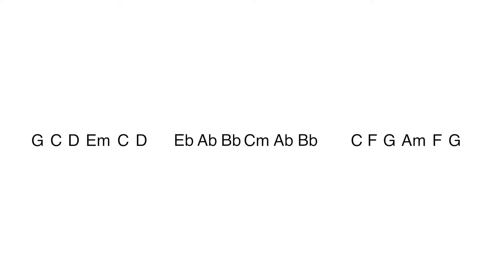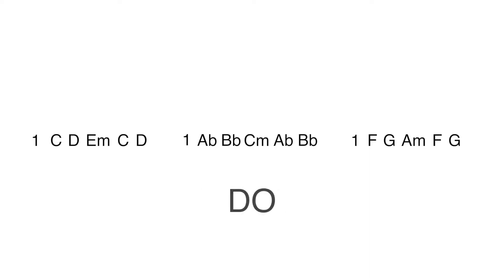This is the key to the Nashville number system. In each of these examples, we will replace the first letter of the pattern with the number 1. In other musical languages, this would be known as the root, the tonic, do, and more. So for now it's: 1, C, D, E minor, C, D; then the next set: 1, A-flat, B-flat, C minor, A-flat, B-flat; and the last one: 1, F, G, A minor, F, and G.